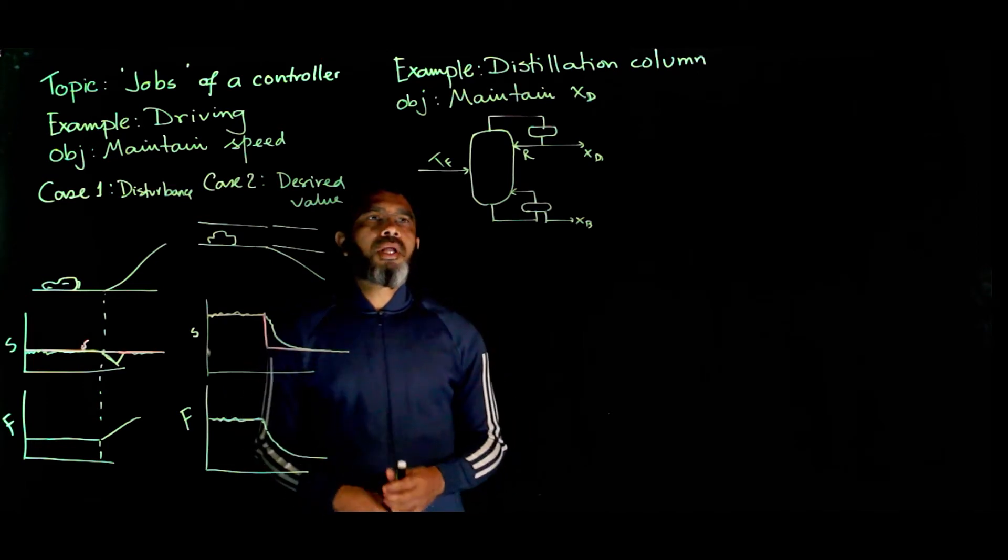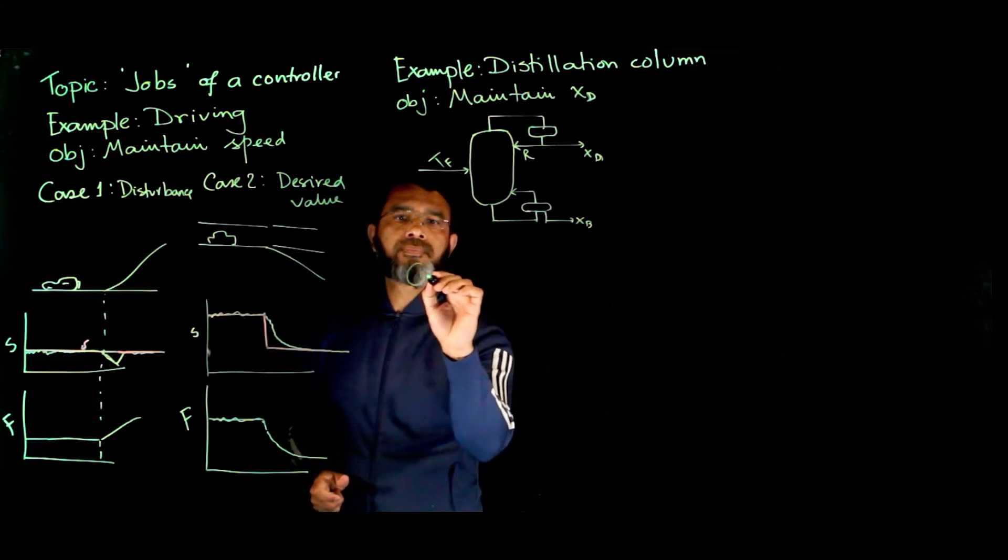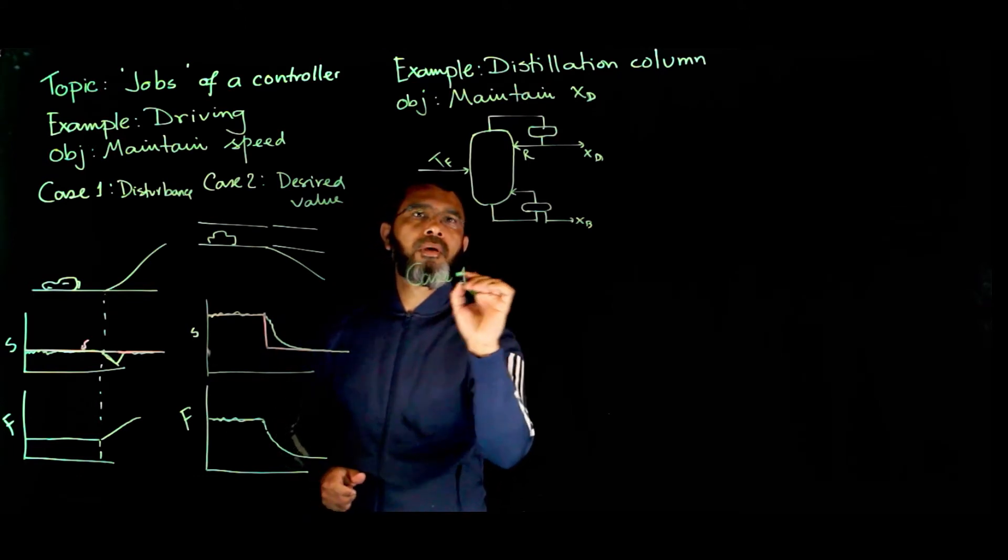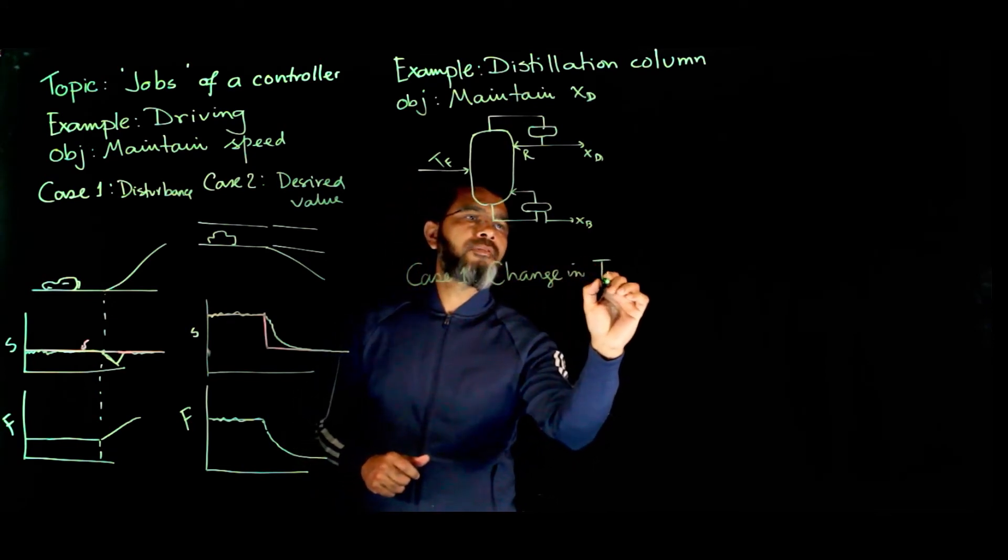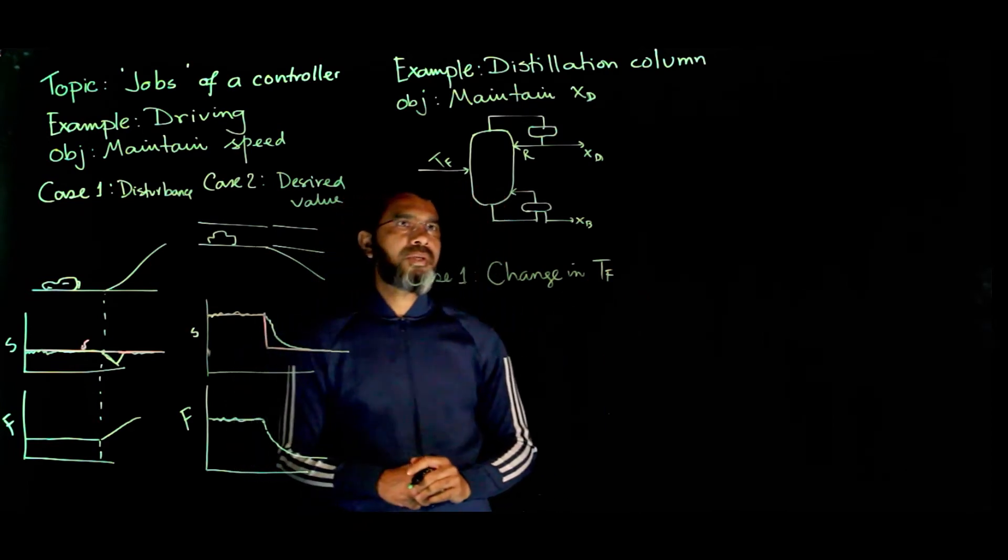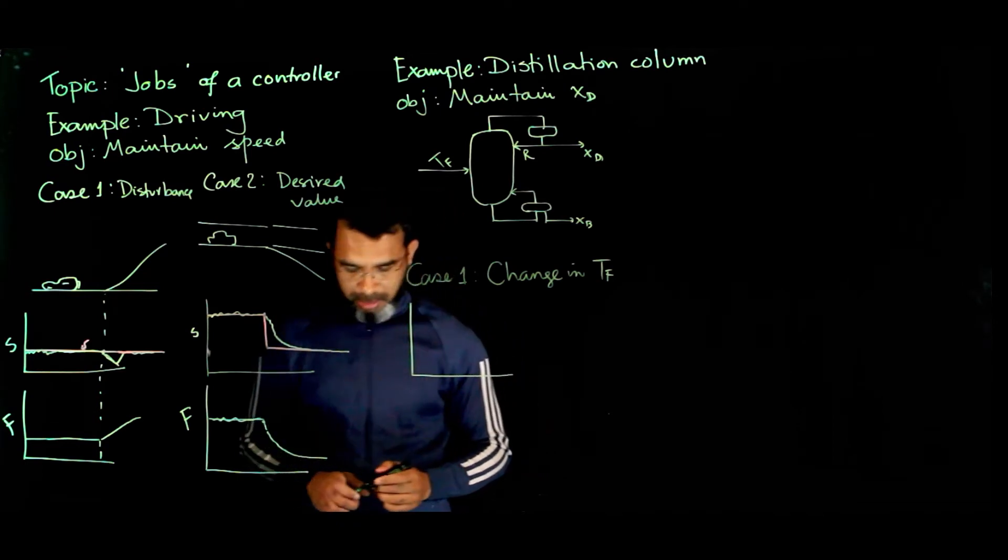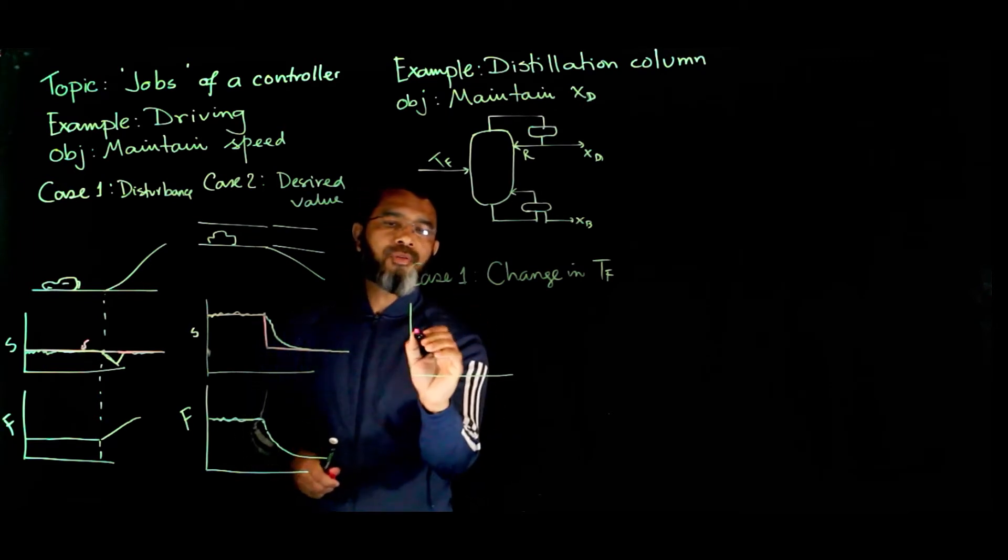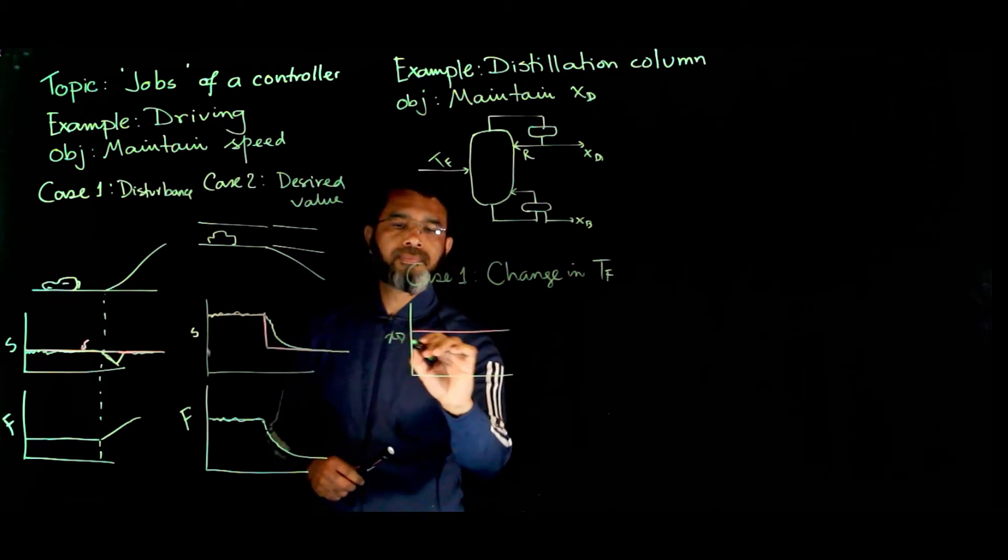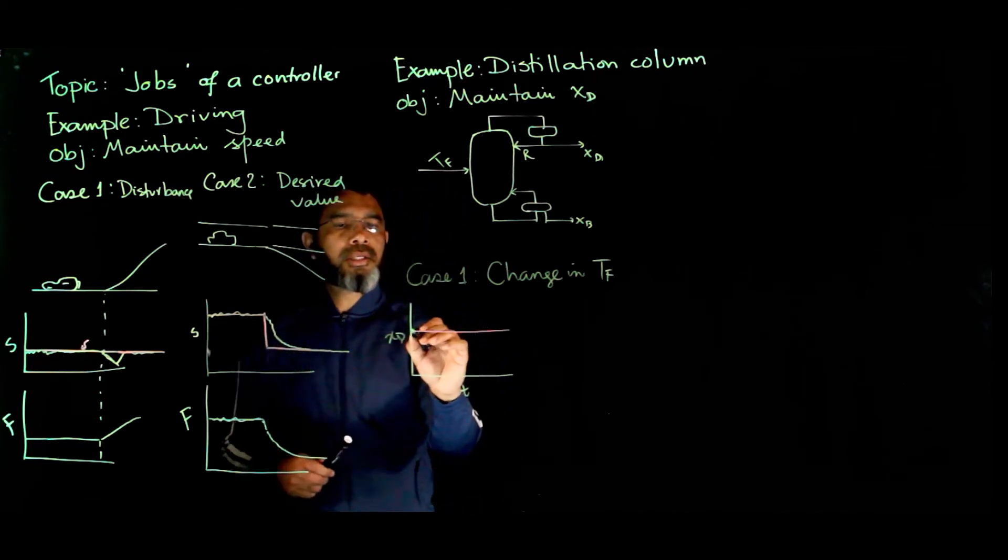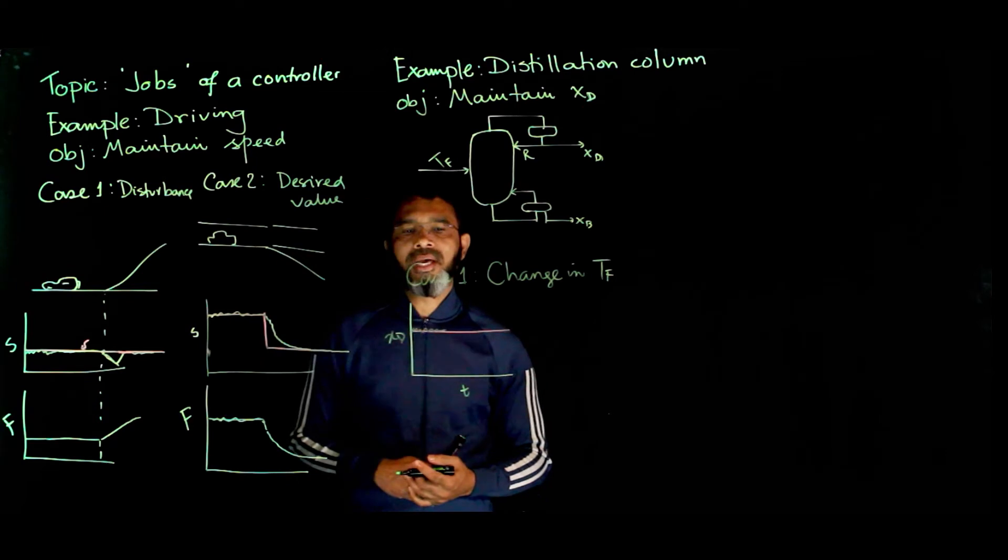Similarly, for the case of a distillation column, we also might have these two scenarios. For Case 1, when there is a change in the feed temperature: suppose you have the distillation column is operating well, you have a set point value for this top product for XD, and the column is running well, you are having this XD to be following the set point.